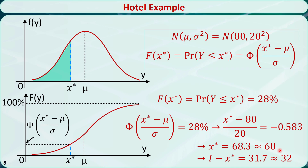This implies that the total inventory I - x* is the maximum number of reservations that should be sold at the discounted fare, which is 32. This is the application of the news vendor inventory model in the capacity-controlled fare for revenue management. Thank you very much.